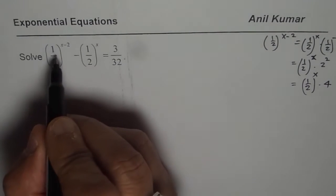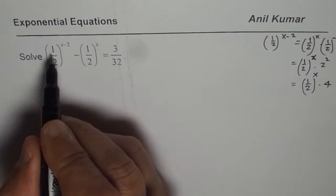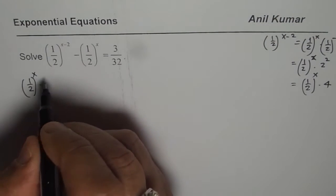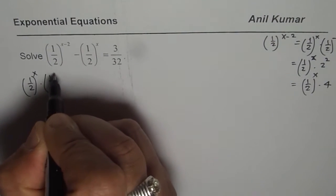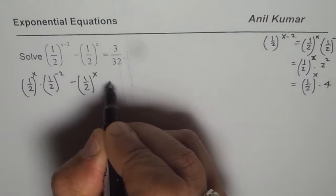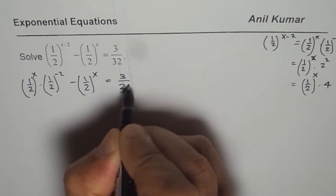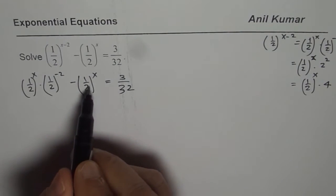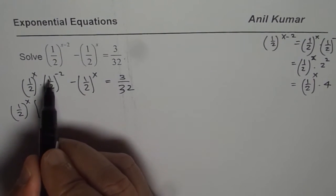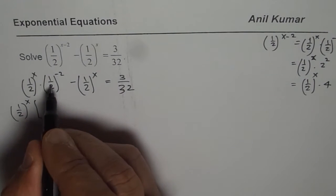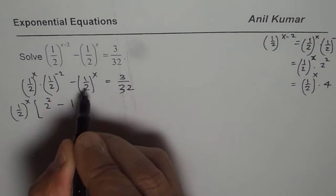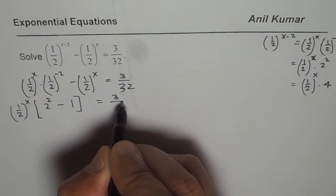So half to the power of x minus 2 means half to the power of x times half to the power of minus 2. When you combine them, you get this fraction. I am redoing what I showed you on the right side — it equals 3 over 32. Now as you can see, I can take half to the power of x as a common factor. So I get 2 squared minus 1, because half to the power of x has been taken common, equals 3 over 32.